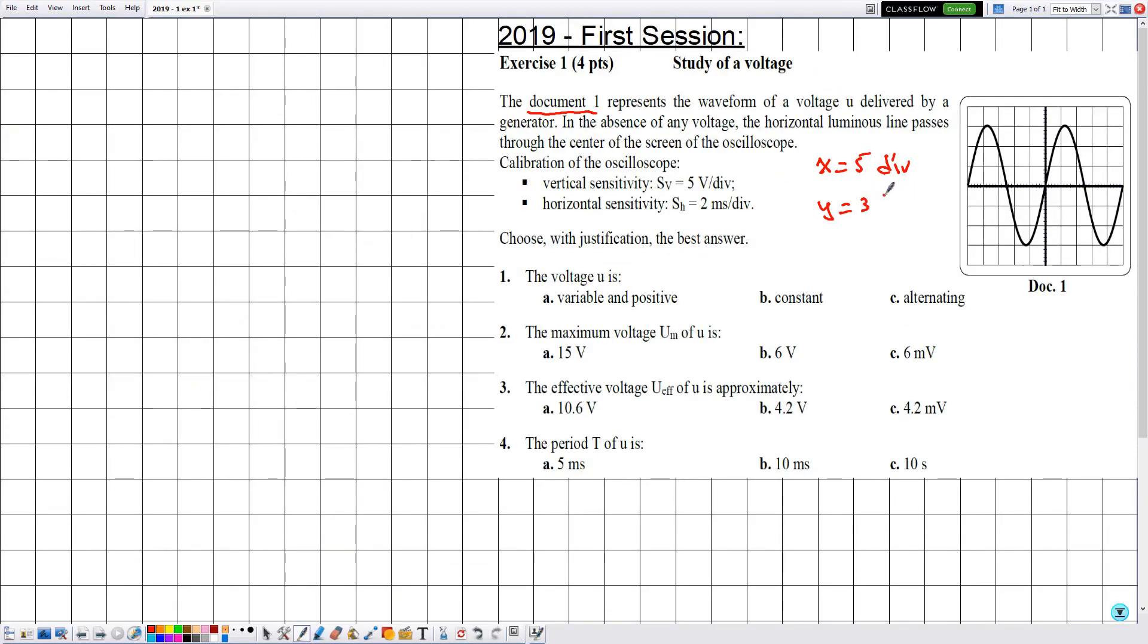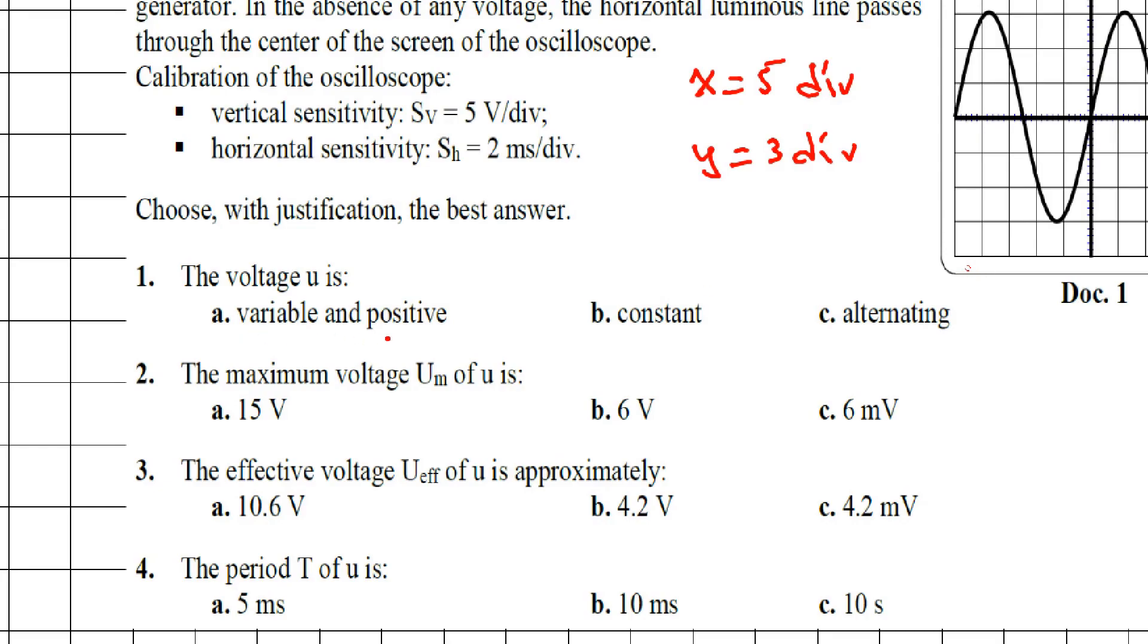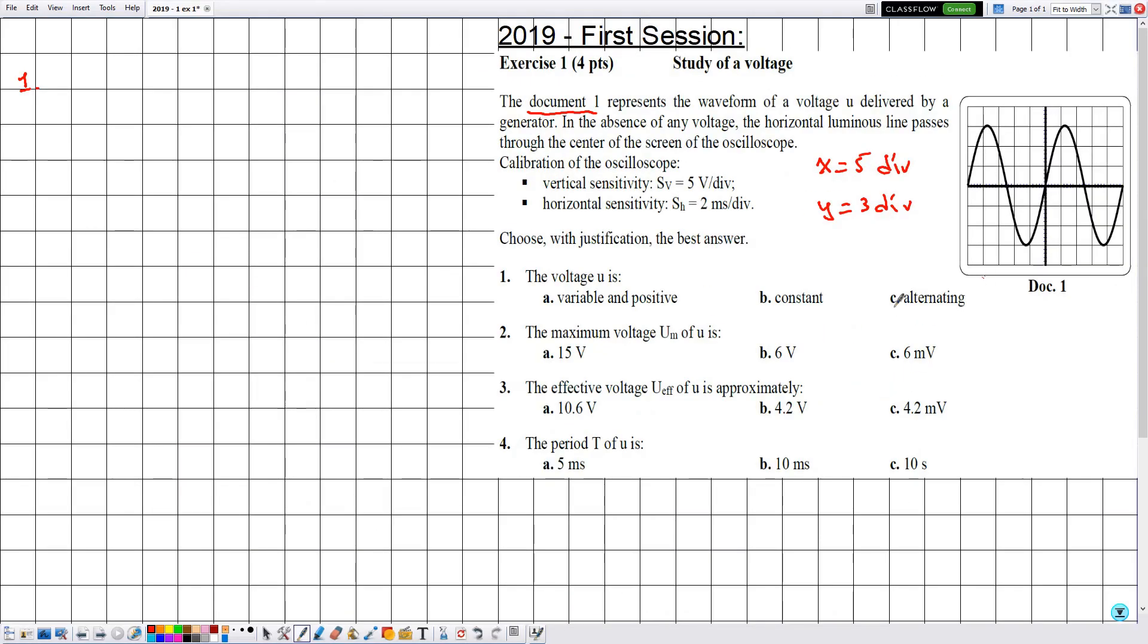Now they are telling me choose with justification the best answer. Number one: the voltage u is a) variable and positive, b) constant, or c) alternating. In order to choose the best answer, they are asking about the type of the voltage. First, let's justify the type of this voltage.